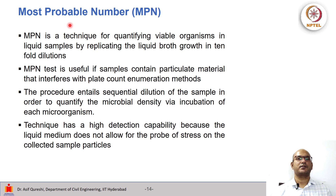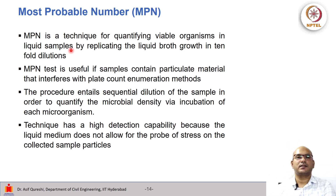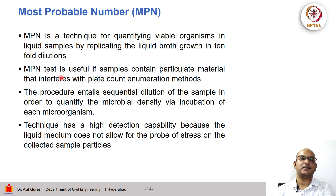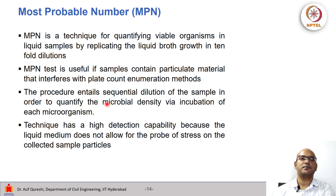The next method is the determination of the most probable number, or MPN. This is a technique for quantifying viable organisms in liquid samples, generally done by making tenfold dilutions. This test is useful if samples contain particulate matter that interferes with plate count enumeration methods. The technique has a high detection capability because the liquid medium does not allow for stress on the collected sample particles.